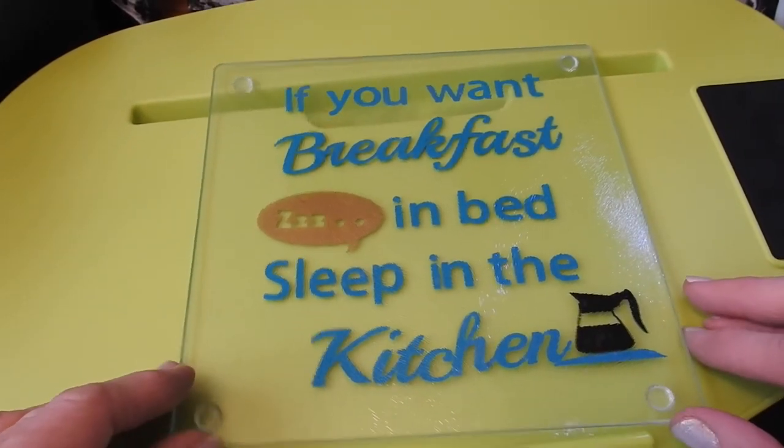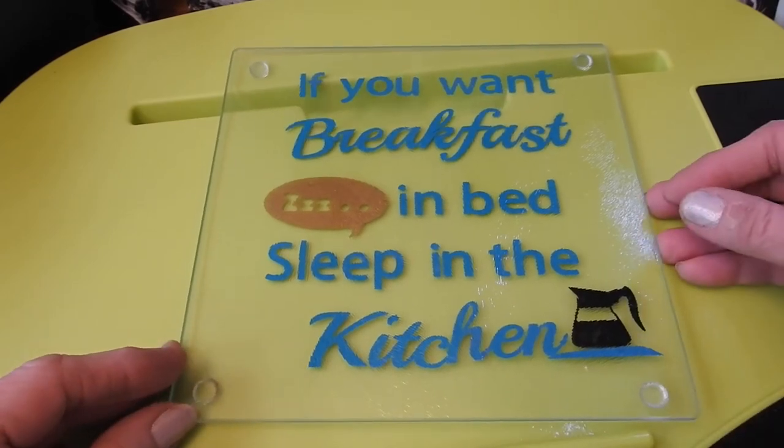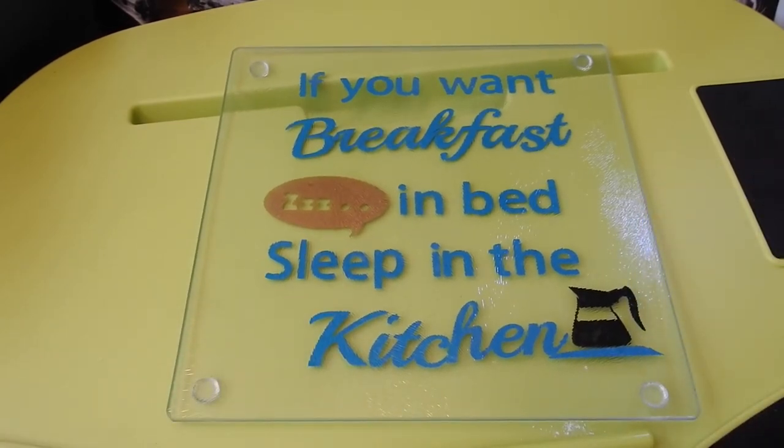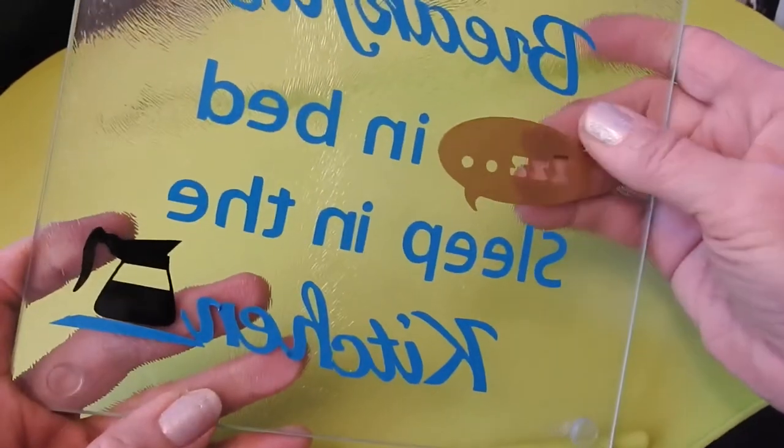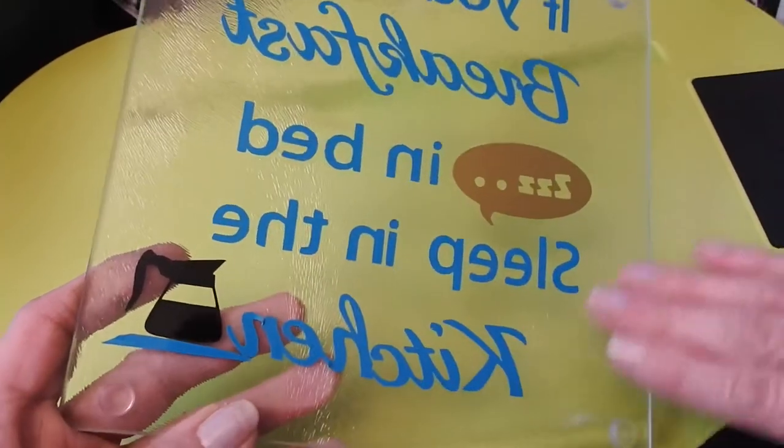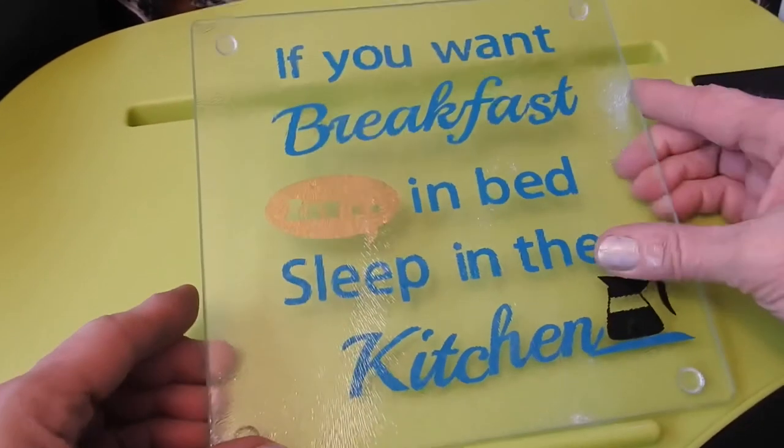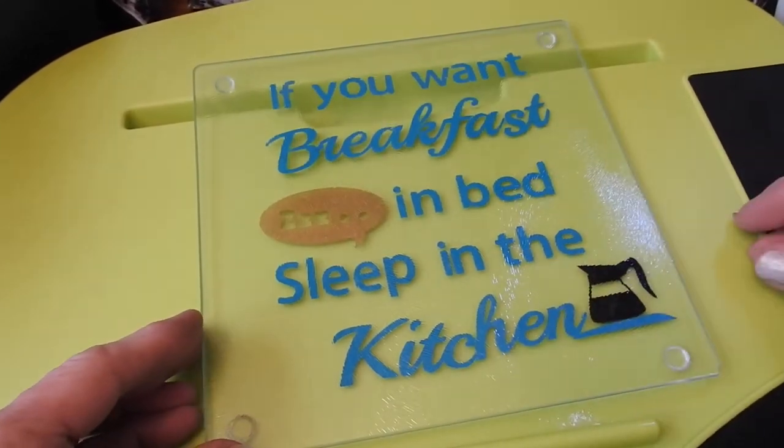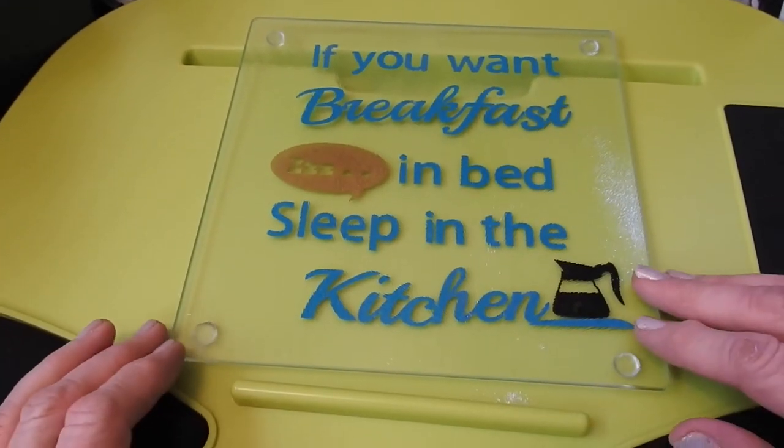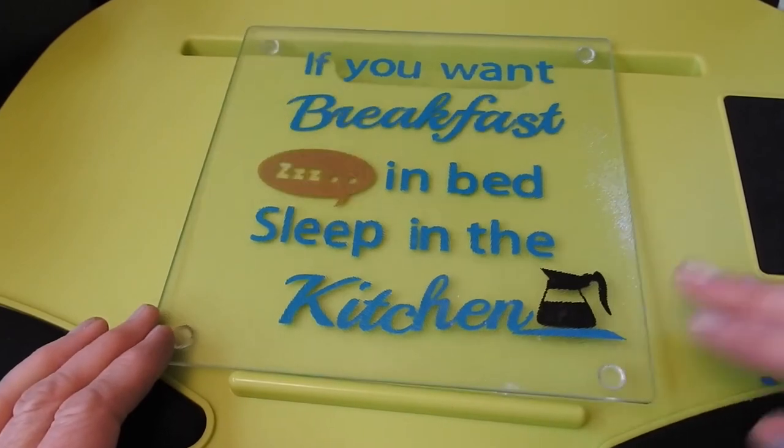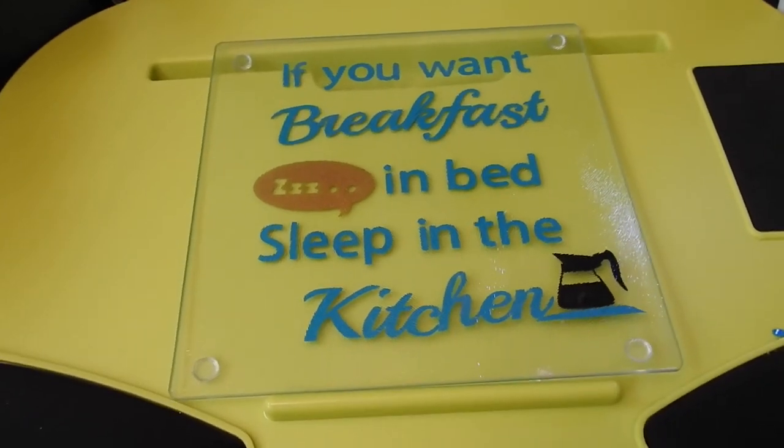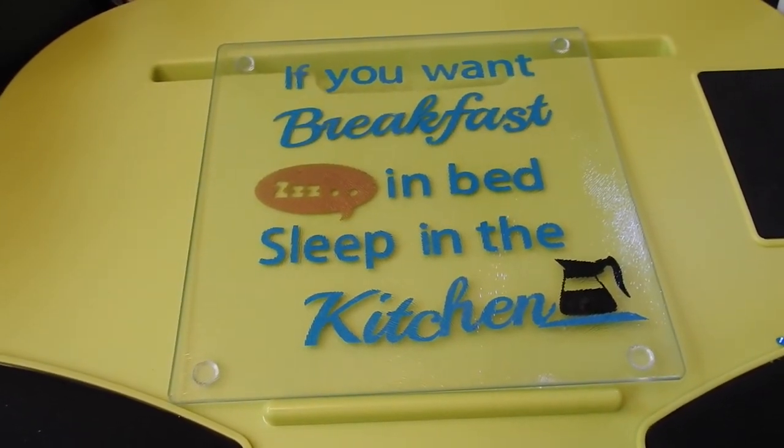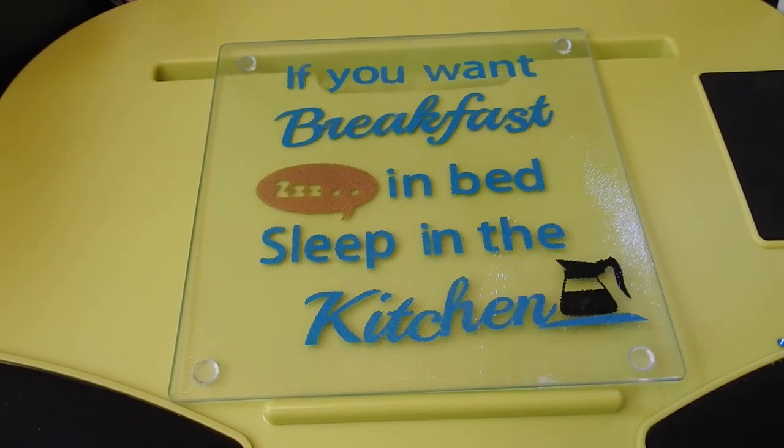Just make sure that your vinyl is down nice and smooth. All your letters are down nice and smooth. Just go through that when you're finished. Let me straighten this up a little bit, this little mouse pad that I'm working on. Let me straighten it up so you can see it straight. And there you go. If you want breakfast in bed, sleep in the kitchen. Pretty cool.